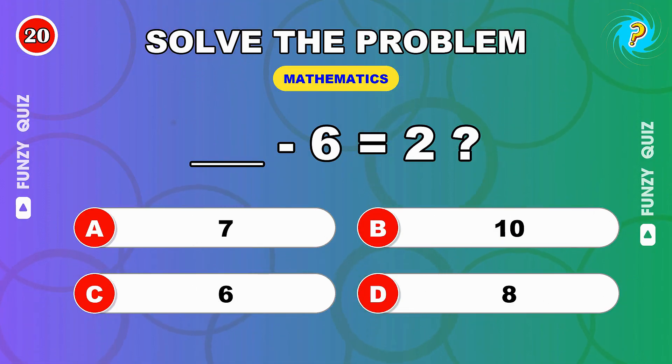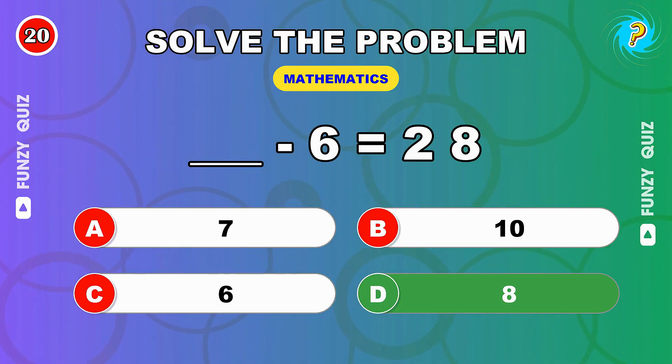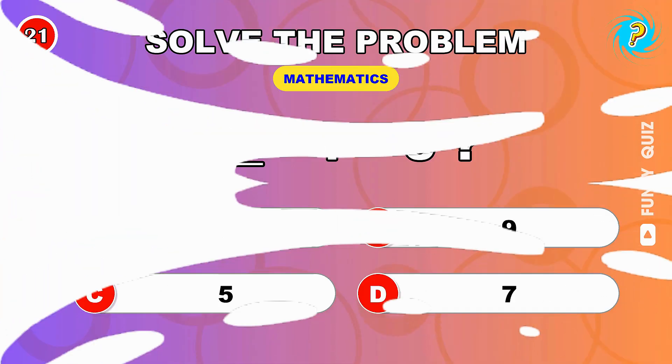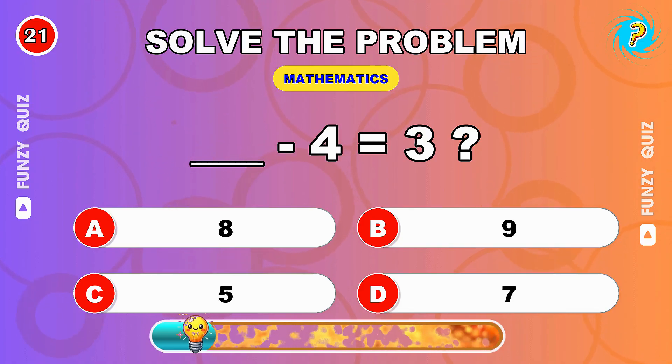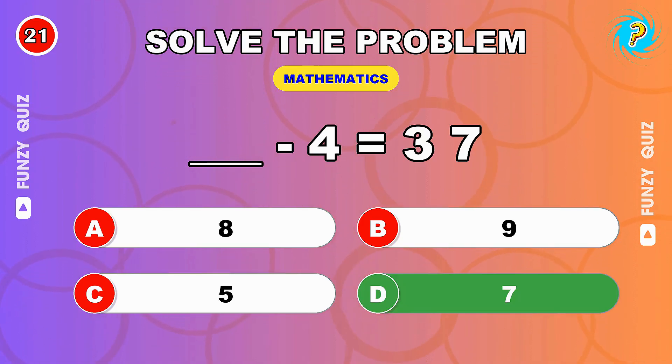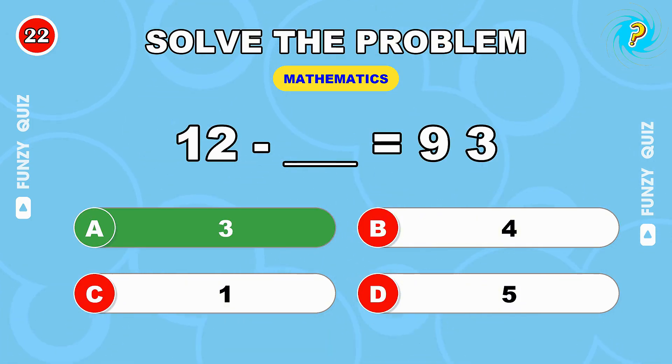What number minus 6 equals 2? 8, there you go. Solve this: what number minus 4 equals 3? 7, bingo.